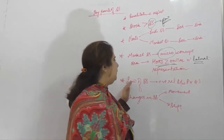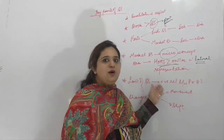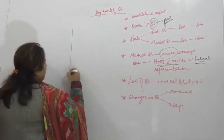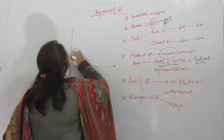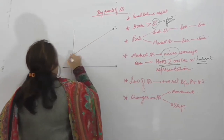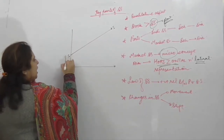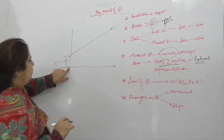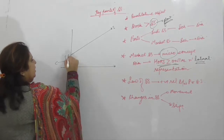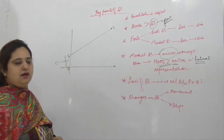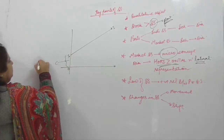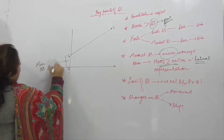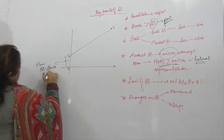सारे के सारे factors constant रहेंगे, सिर्फ own price of a commodity बदलेगी। As a result, what is the shape of a supply curve? Supply curve is always upward sloping. याद रखें यह कहाँ से originate करती है — OYX से — क्योंकि यहाँ से point of origin तक जहाँ से supply शुरू होती है, that is known as a minimum supply price।